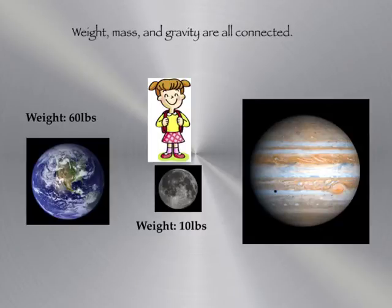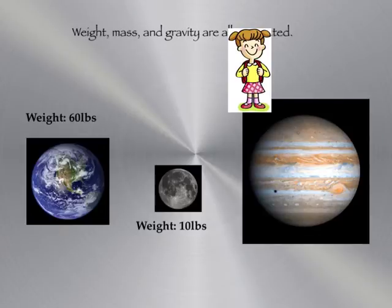If this same little girl would be able to travel to Jupiter, she would actually not change her mass again. But the mass of the object she's standing on, the planet Jupiter, is much larger than either the moon or the Earth. Her weight would therefore increase because of the stronger pull of gravity from a larger massed object. Her weight would be 142 pounds.